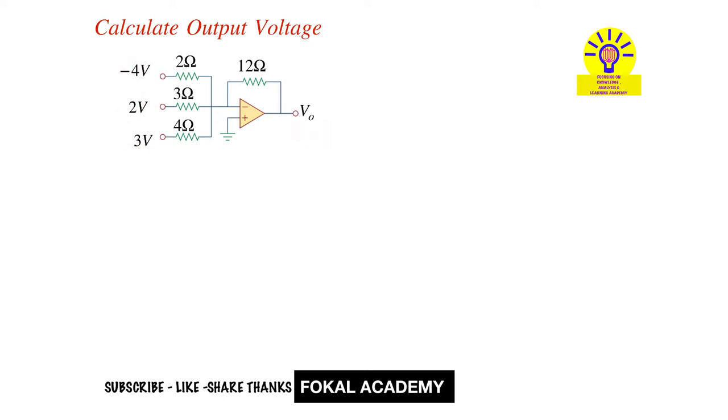So first of all understand what is the inverting amplifier. This is the inverting amplifier circuit. So here the output voltage is always equal to minus R2 by R1 into VI. So here R2 is the feedback resistance and R1 is the input resistance, VI is the input voltage, and V0 is the output voltage.